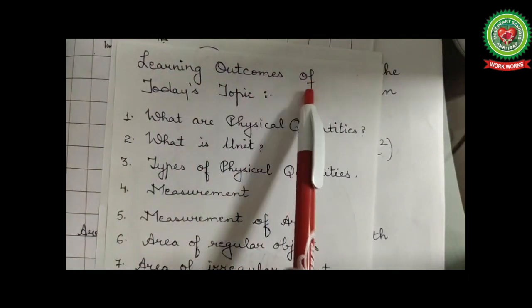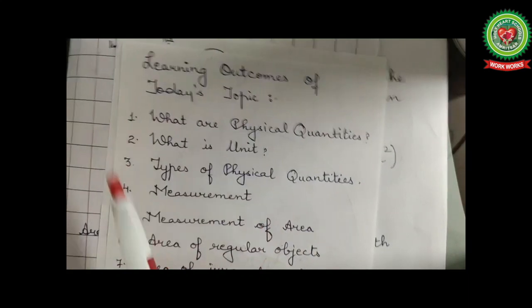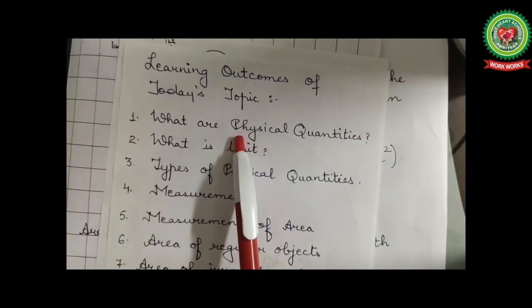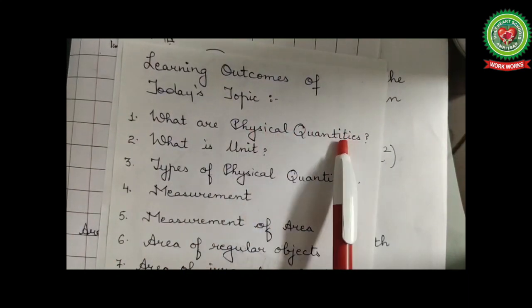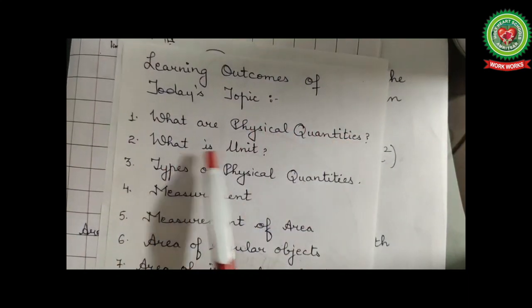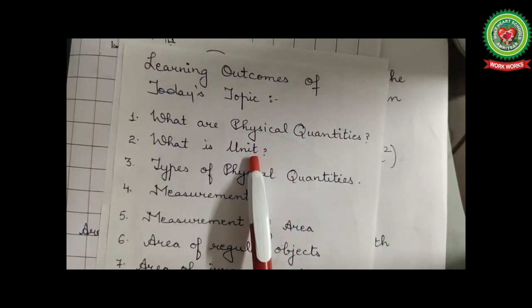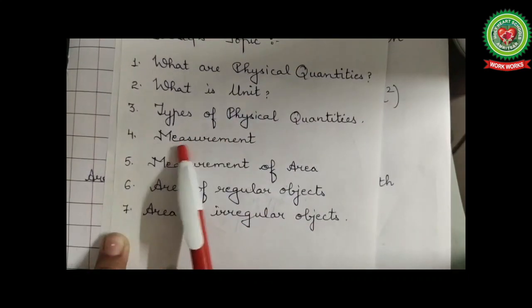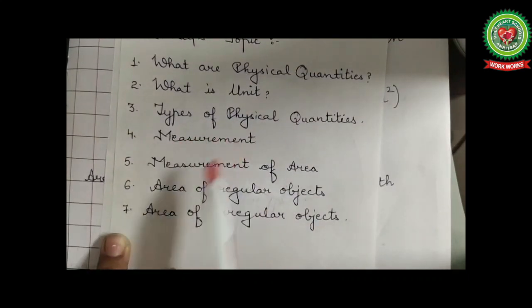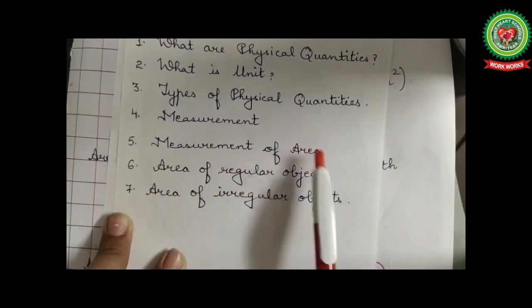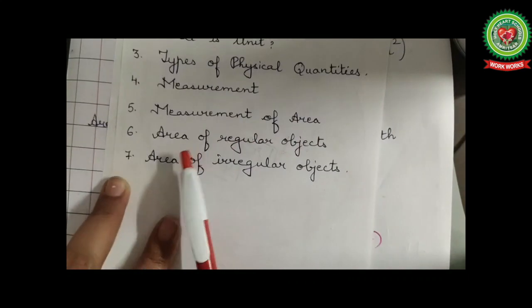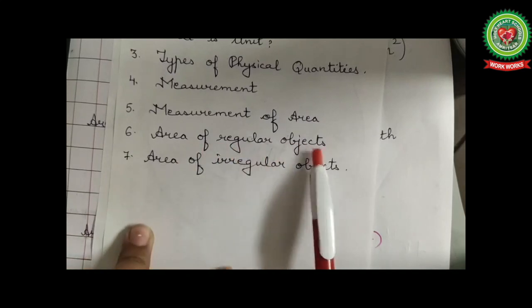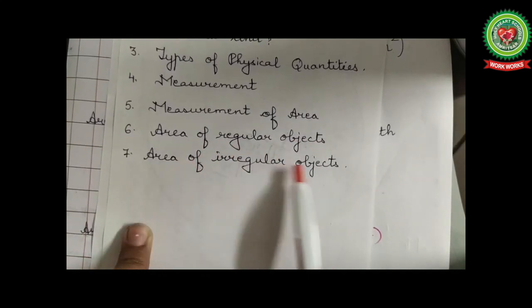The learning outcomes of today's topic are: what are physical quantities, what is a unit, types of physical quantities, what is measurement, measurement of area, area of regular objects, and area of irregular objects.